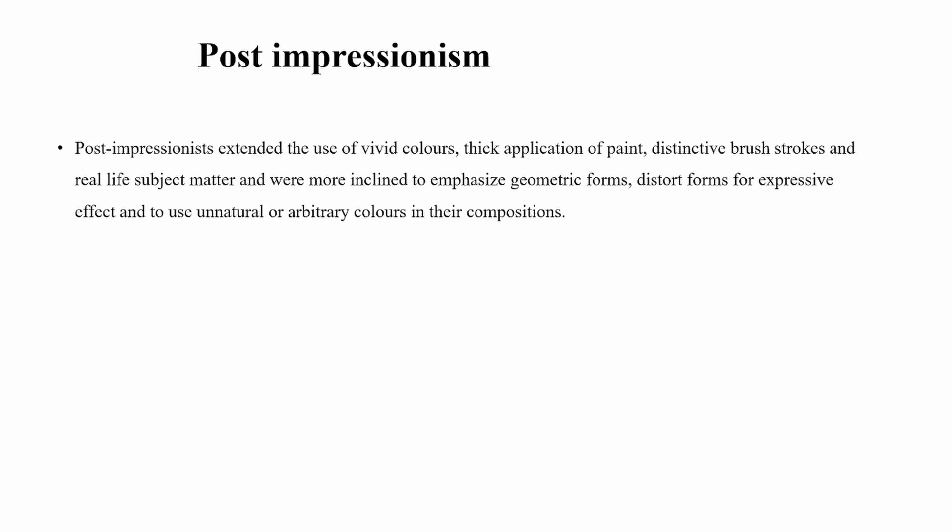Post-impressionists extended the use of vivid colors, thick application of paint, distinctive brush strokes, and real-life subject matter. They were more inclined to emphasize geometric forms and distorted forms for expressive effect, and used unnatural colors in their compositions. These are the key characteristics of post-impressionism.